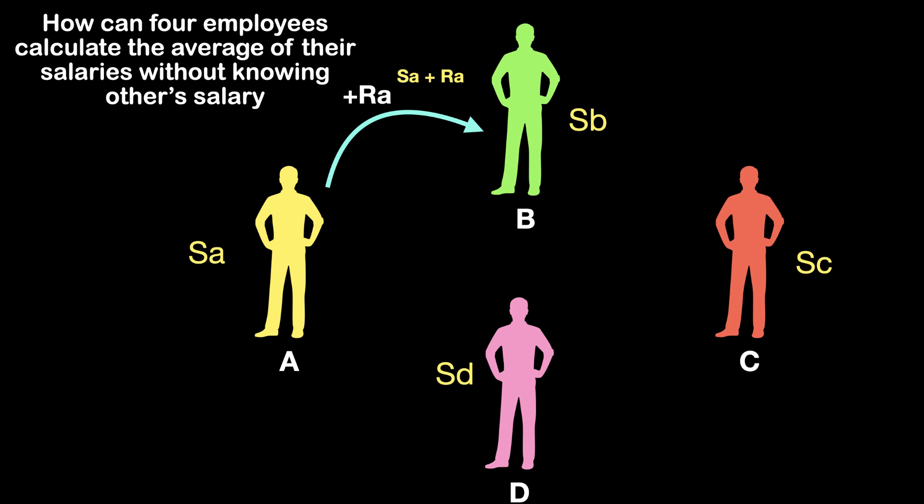In the next step, B adds a random amount, say Rb, to his own salary and gives that to C without showing that to A. C won't be able to know B's or A's salary as it was added a random amount known to individuals only. Now C will get the figure Sa plus Ra plus Sb plus Rb. In the next step, C does the same and gives the final figure to D without knowing it to B.